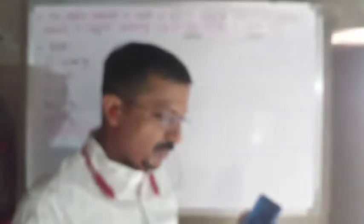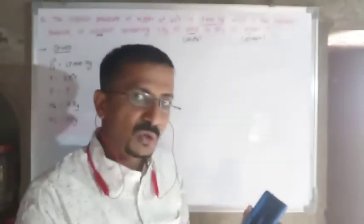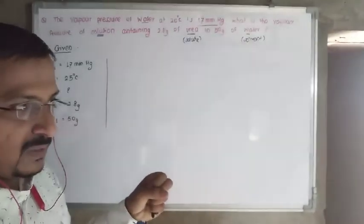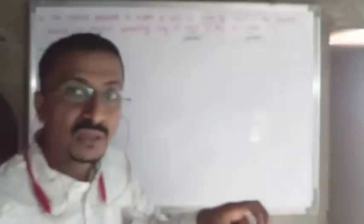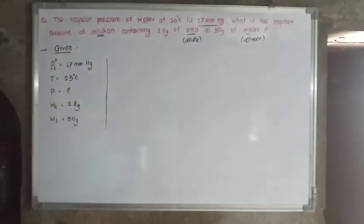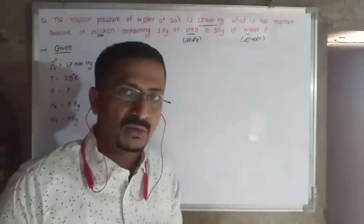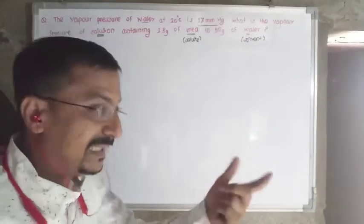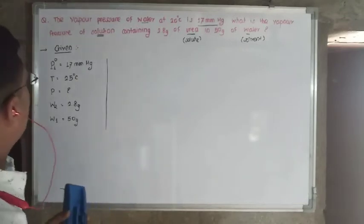Once you write the given data, identify which concept the problem is based on. By observing two or three key words here, one can understand the problem is based on the vapor pressure lowering concept. Since it is based on vapor pressure lowering, recall the relevant formulas — those that contain terms P1 naught, P, weight of solvent, and weight of solute.